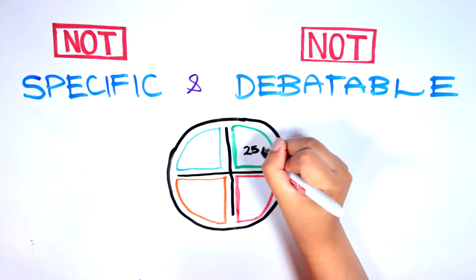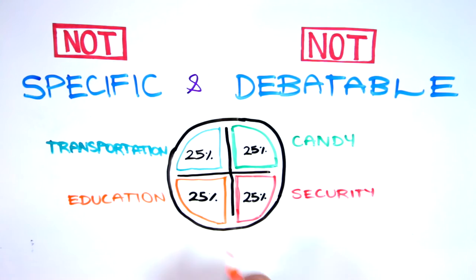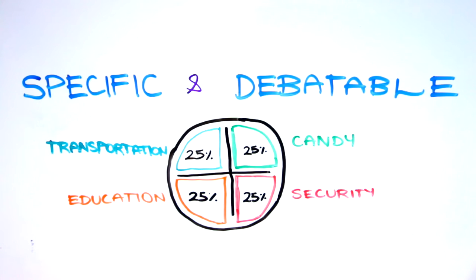For example, at least 25% of the federal budget should be spent on improving education. The latter is debatable and can be developed throughout the paper in a number of ways.